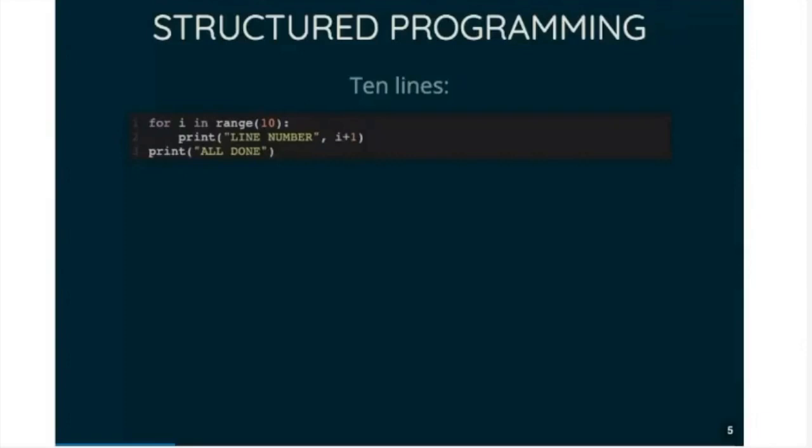So the first program I wrote and I had in basic there to printed out 10 lines. Here's the equivalent in Python. Much easier to follow. No go to's. You can tell that the indented print is the thing that happens in the loop and the all done happens at the end. And you can tell immediately where the bit that repeats starts and ends.